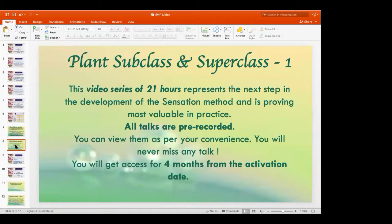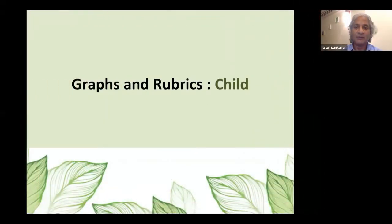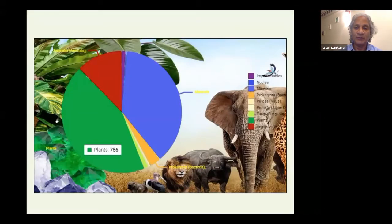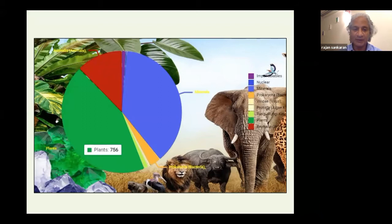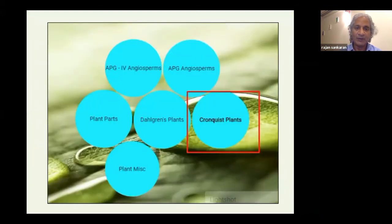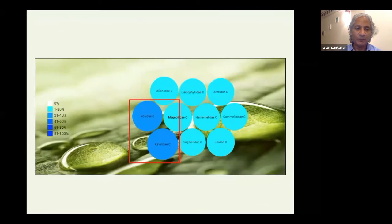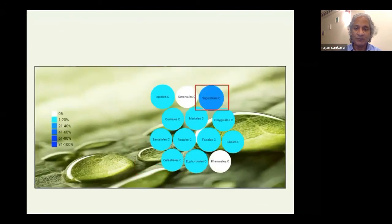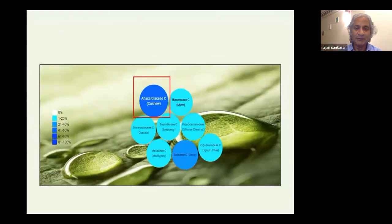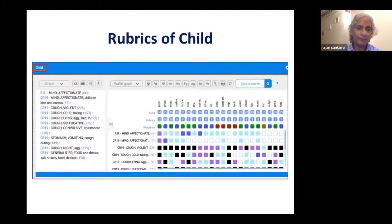All the talks are video recorded and you can watch them as per your convenience over four months. I've used the new Synergy homeopathic software, which is a development of the Mac repertory and reference works, and I've used the graphs from there. You can see how it brings you through these graphs to the sapindalis and then to the anacardiaceae, and you can see the rubrics of the child.